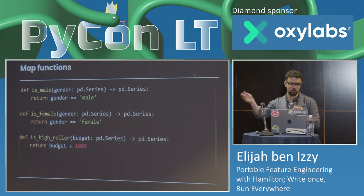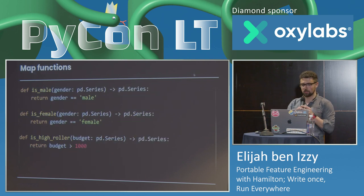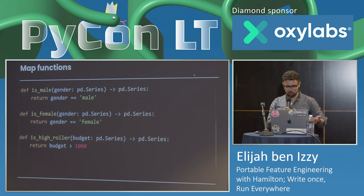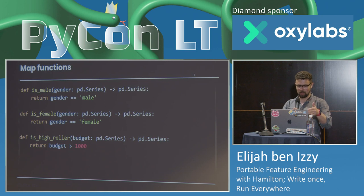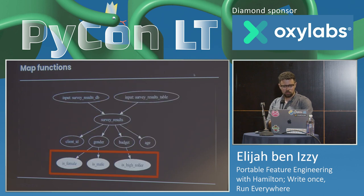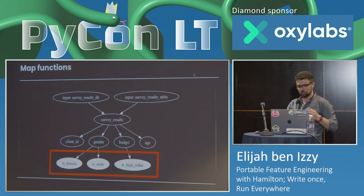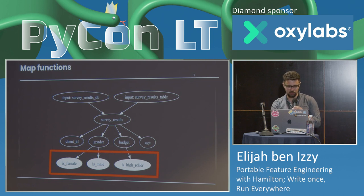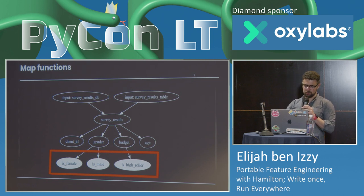Now let's add some value. We've got these map functions: is_male, is_female, is_high_roller. This stuff should be dead simple — just simple operations on pandas series. Once we add them to the pipeline, we have these as features. We've got three of the features our model needs, all in a very simple set of functions.